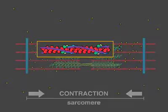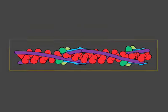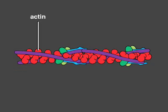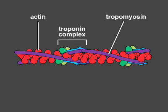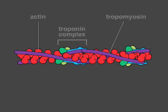This is because myosin binding sites on the actin filaments are all covered by a rod-shaped protein called tropomyosin. A calcium-sensitive complex, called troponin, is attached to the end of each tropomyosin molecule.